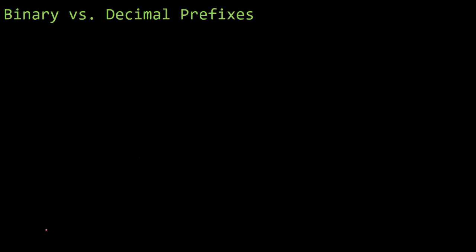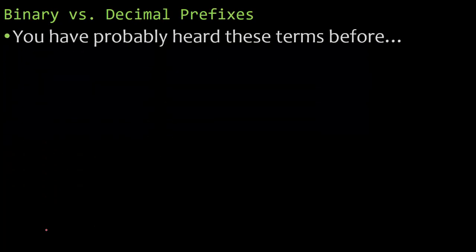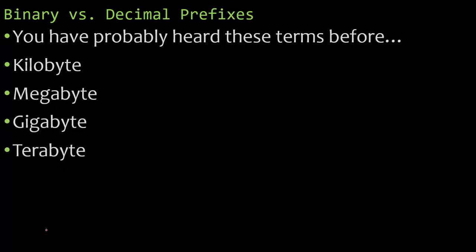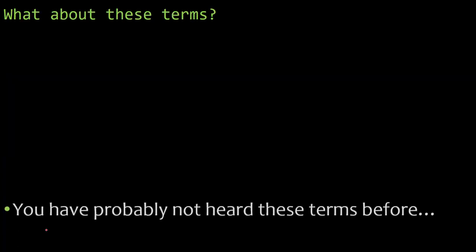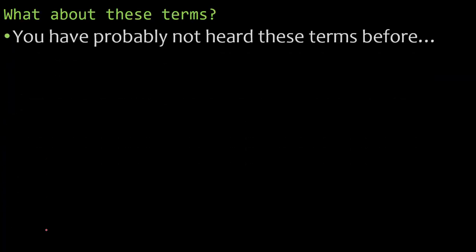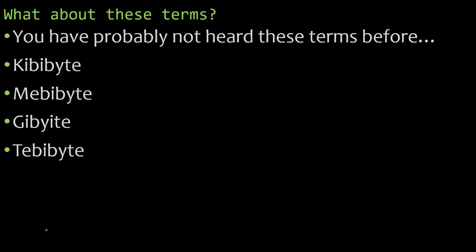Let's dive into these prefixes. Binary versus decimal prefixes. You've probably heard these terms before, such as kilobyte, megabyte, gigabyte, terabyte. But what about these terms? Have you ever heard these terms before? Because not many people are familiar with them. Kibibyte, mebibyte, gibibyte, tebibyte. What about those terms? What's the difference between them?